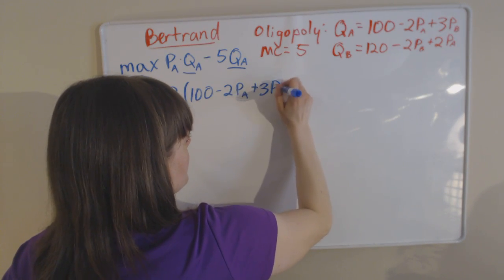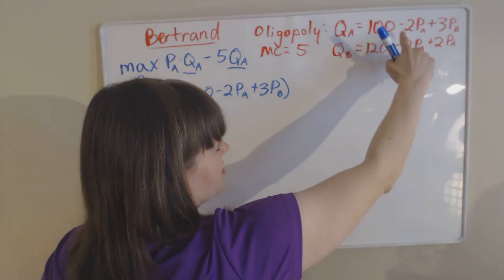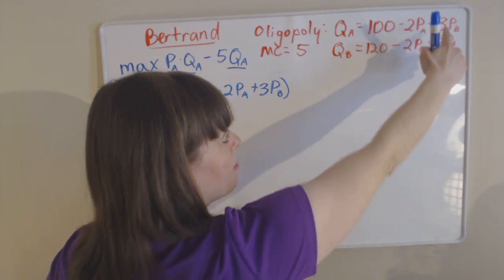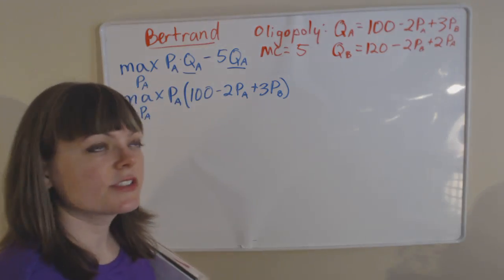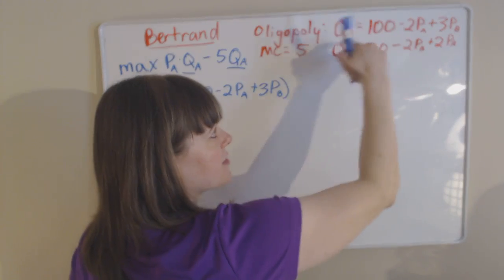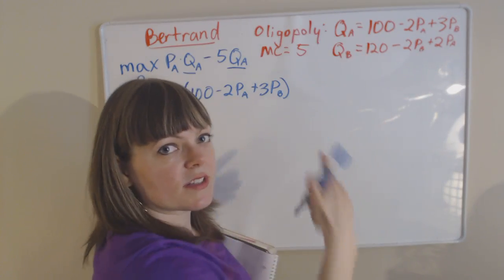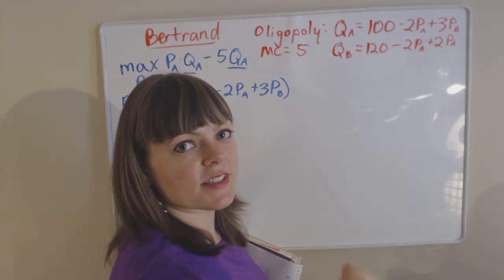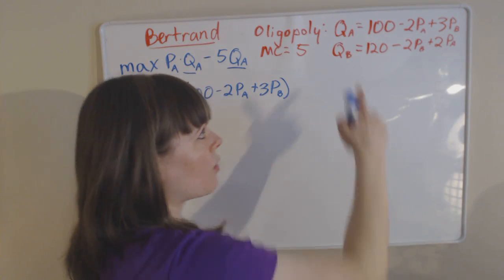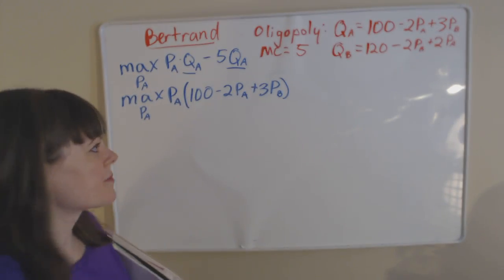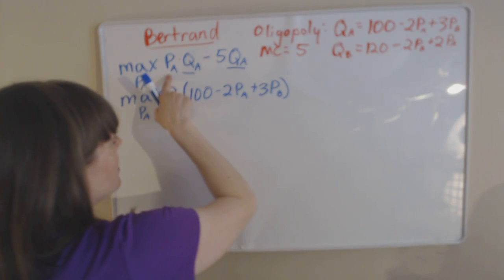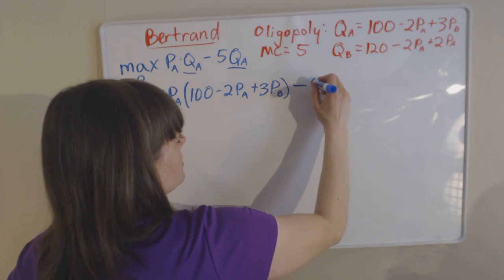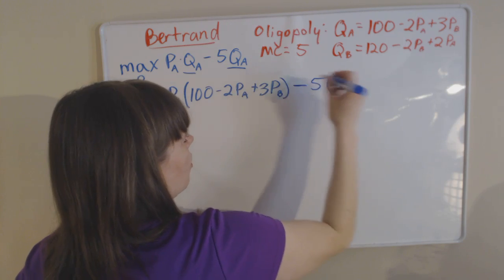We notice that there's a negative sign before the price of firm A and a positive sign before the price of firm B. So if A raises their own price, their quantity sold will go down. If the other firm, their competitor, raises their price, then the quantity sold at firm A will go up. We've plugged in price times quantity minus marginal cost times quantity.